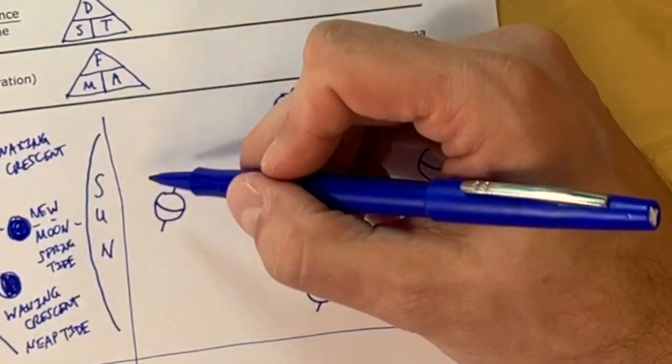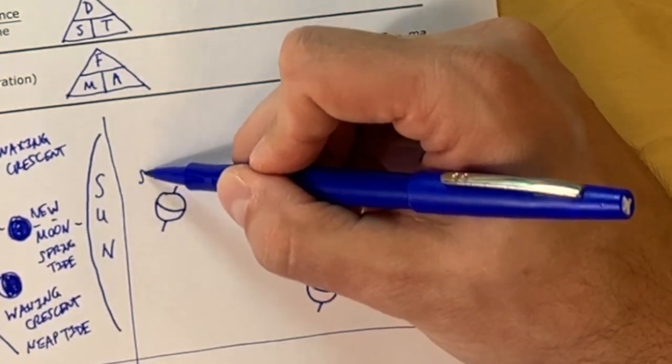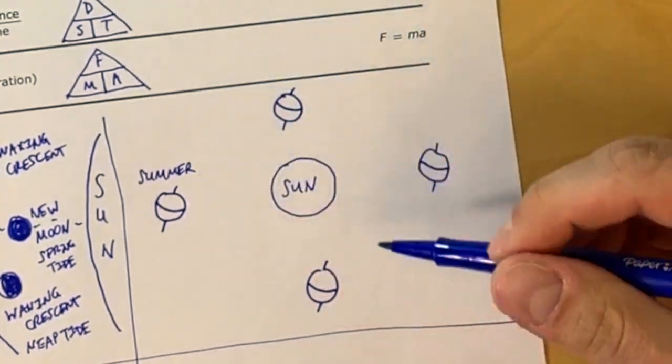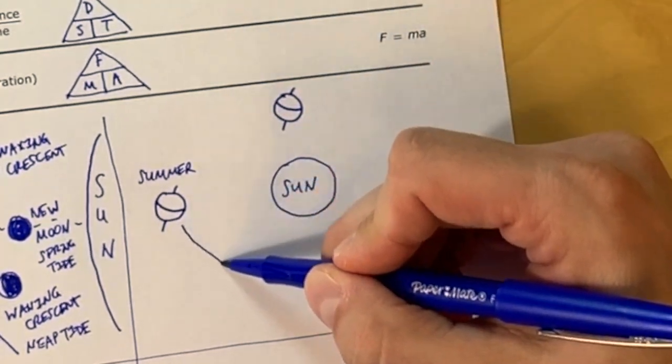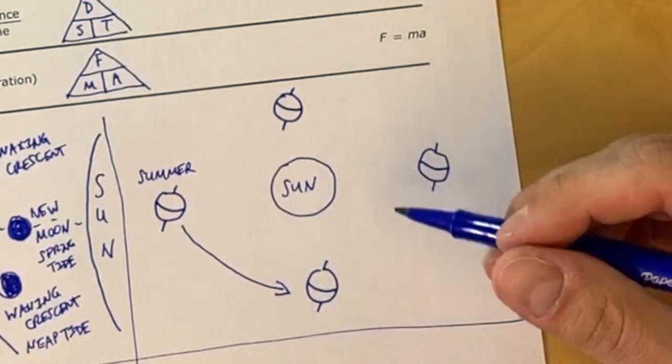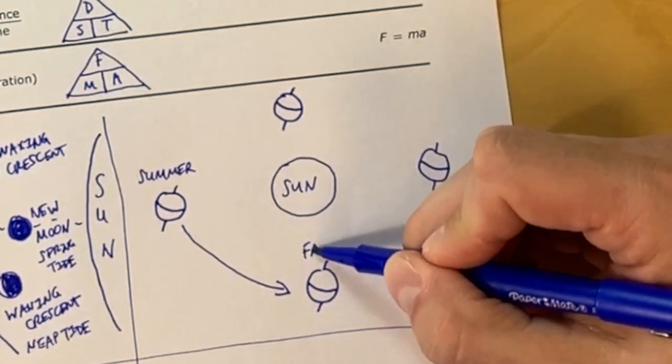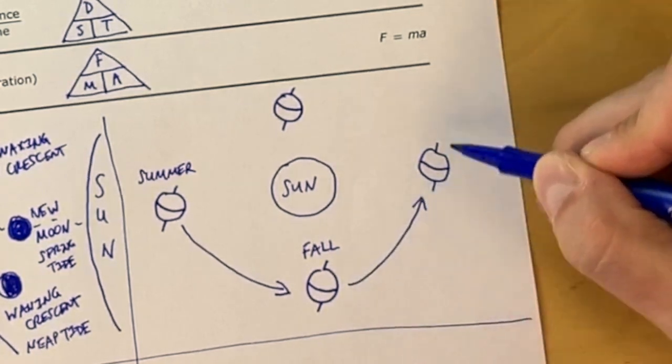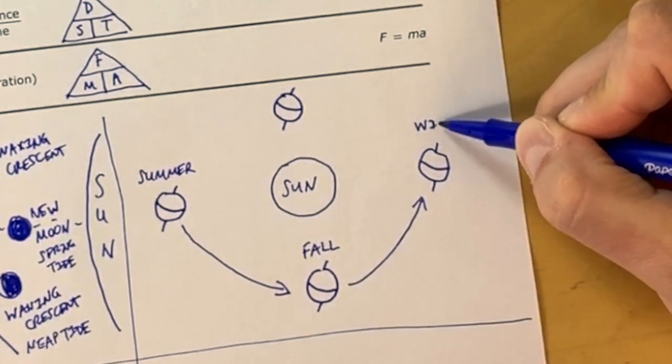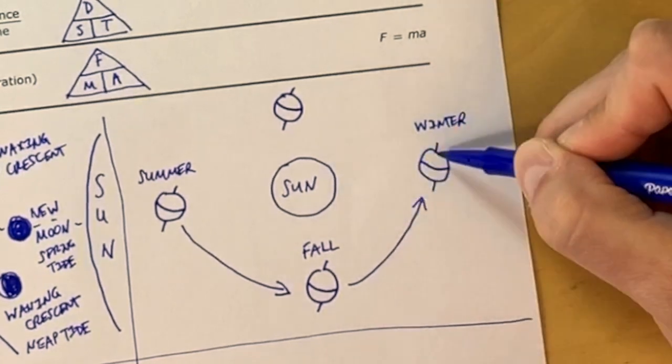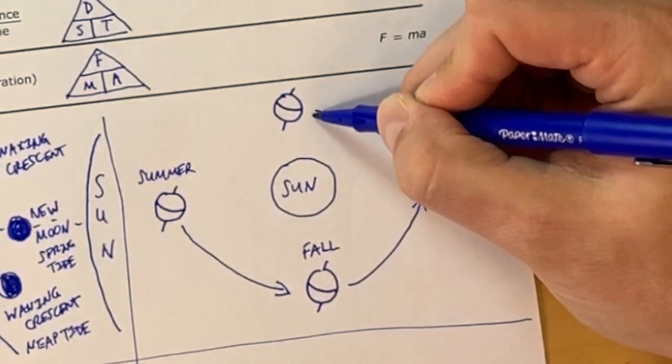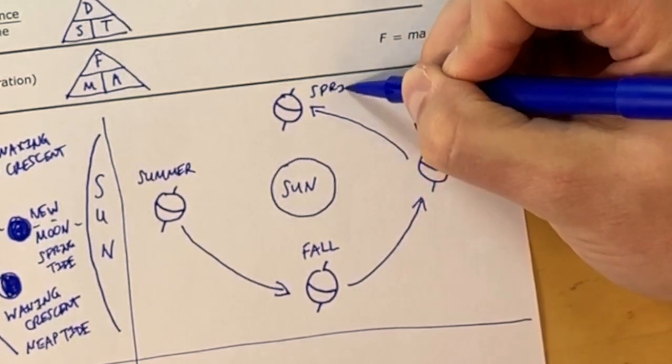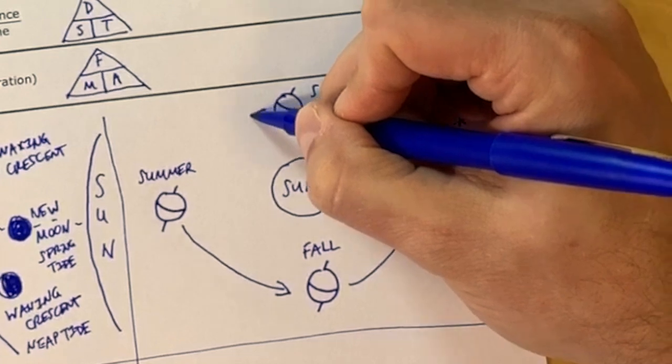We're going to start with the northern hemisphere. When it's pointed towards the sun or it's tilted toward the sun, that will be summer in the northern hemisphere, winter in the southern hemisphere. After summer comes fall. So we'll work our way around. When the northern hemisphere is pointed away from the sun or tilted away from the sun, you'll have winter in the north. And then after winter comes spring and it will just repeat the cycle.